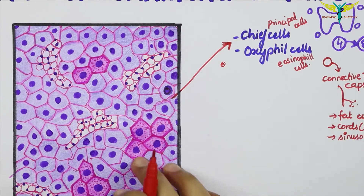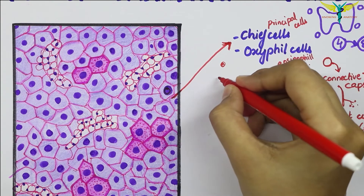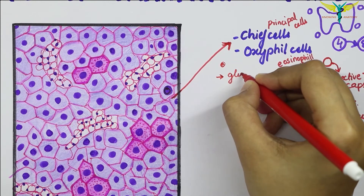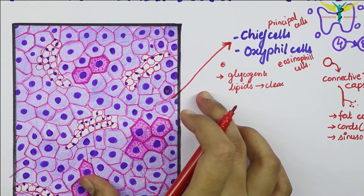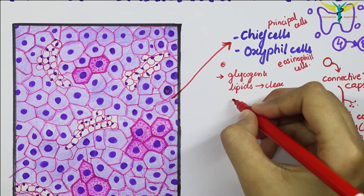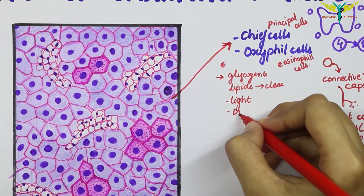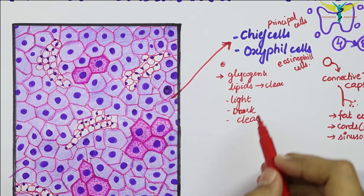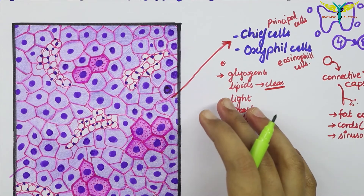The cytoplasm is clear and may be either mildly eosinophilic or basophilic. Sometimes the cell accumulates glycogen and lipids, making it look clear. Three types of chief cells are described: the light chief cell, the dark chief cell, and the clear chief cell — based on their appearance.